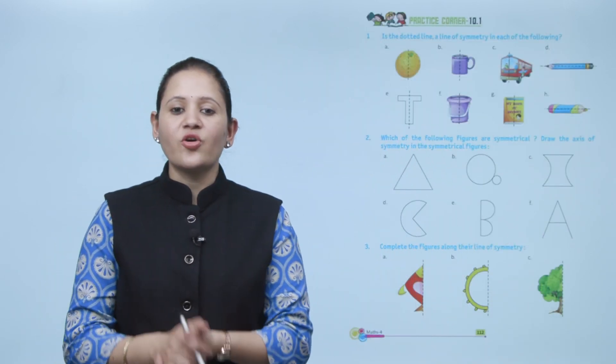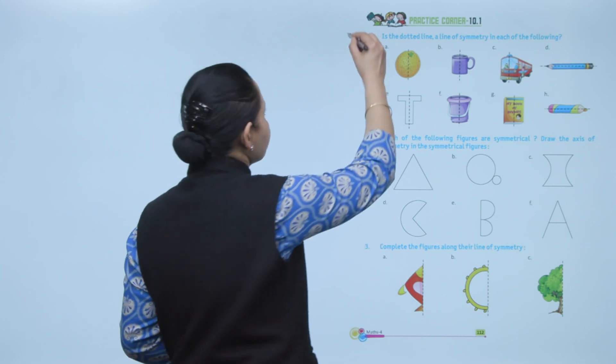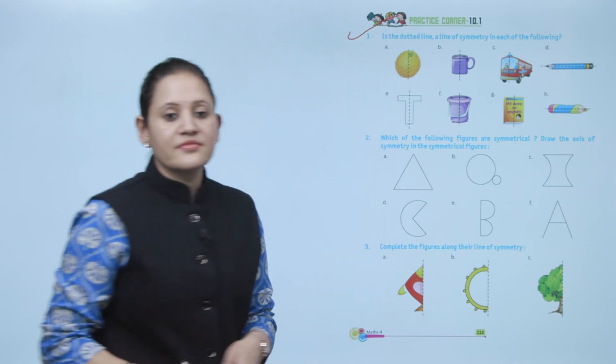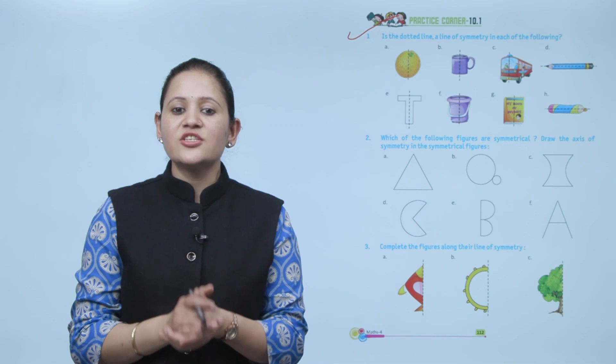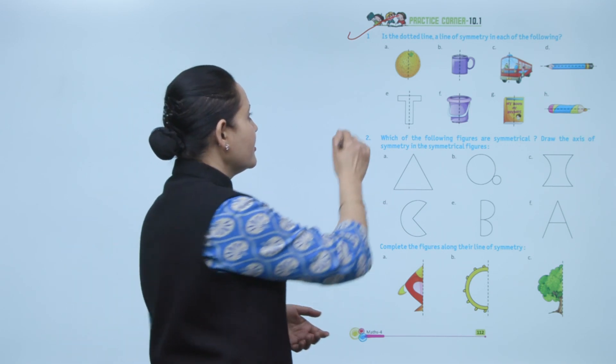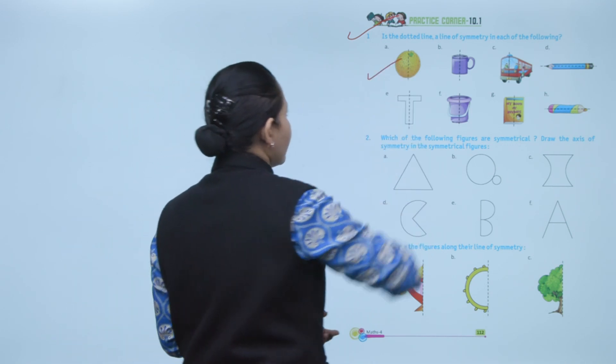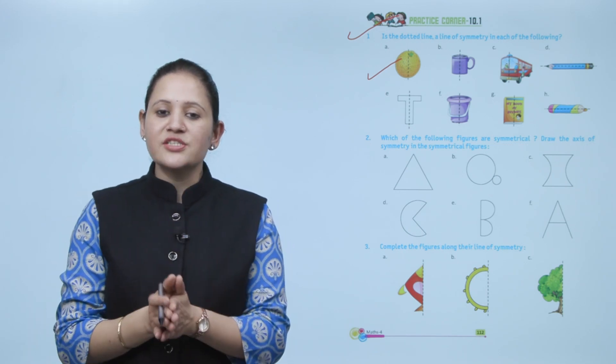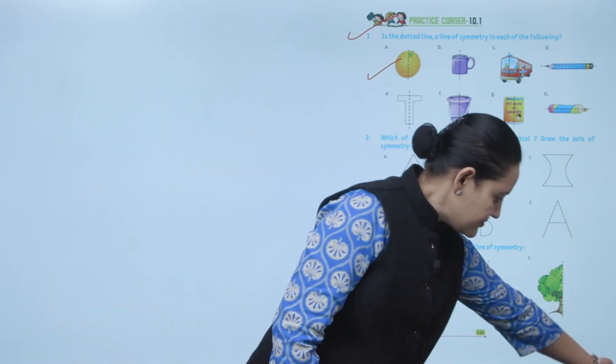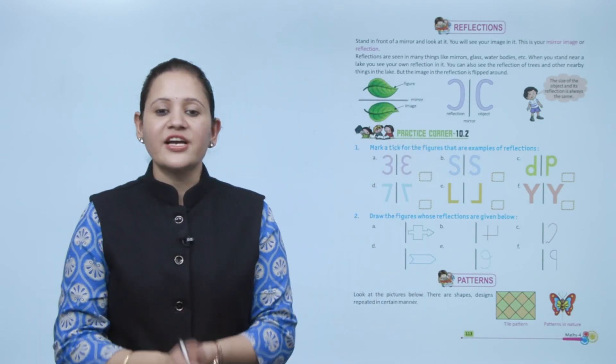Next is Practice Corner 10.1. Is the dotted line a line of symmetry in each of the following? Here yes, this dotted line is a line of symmetry, so we'll tick it. You have to practice all the questions in this exercise.